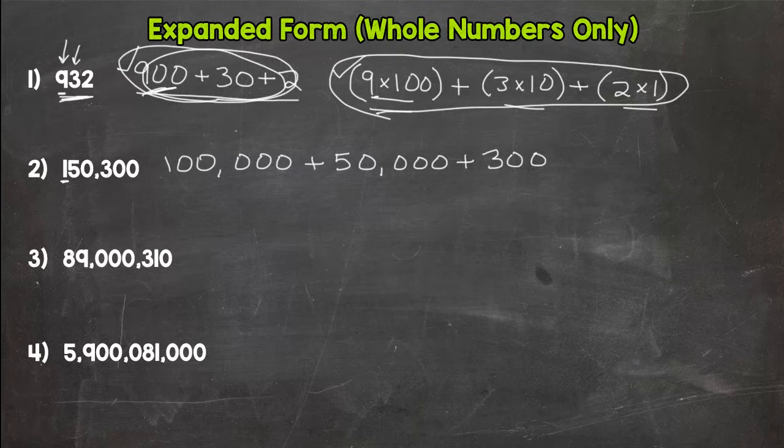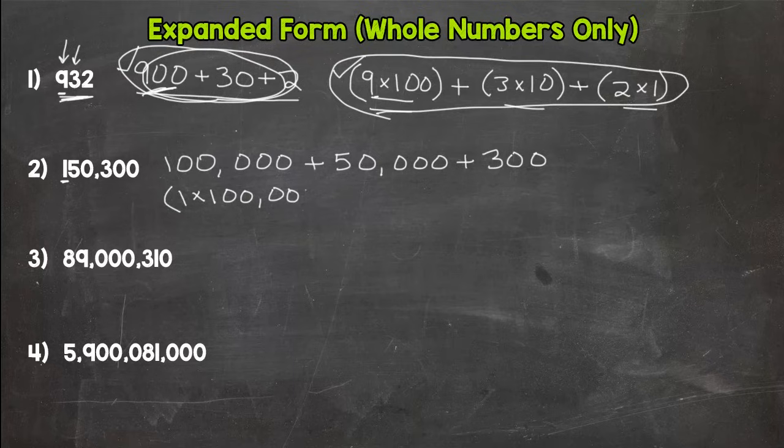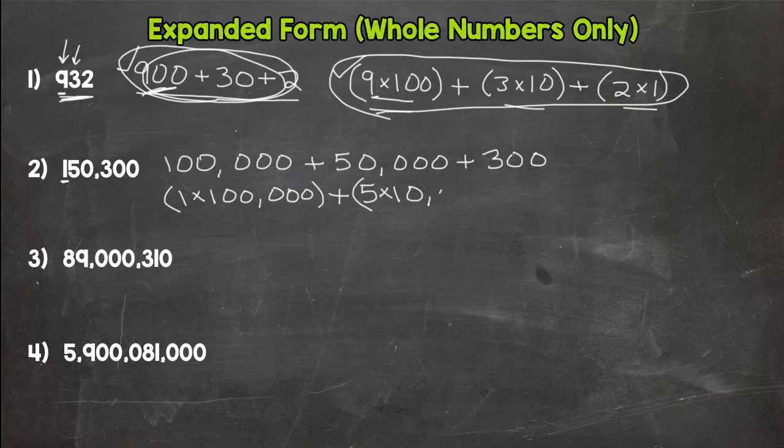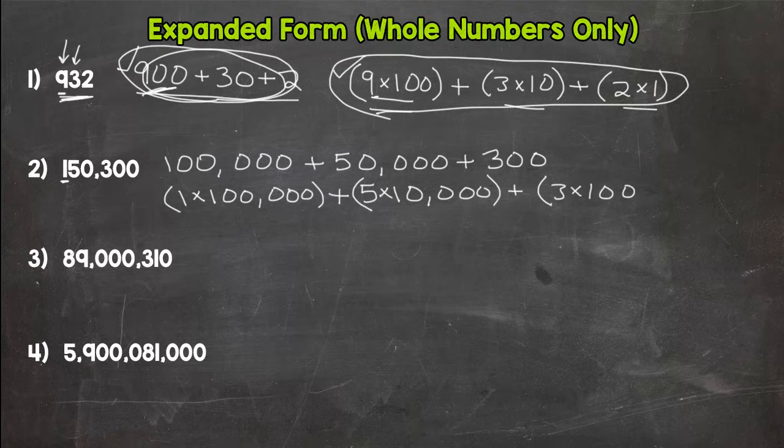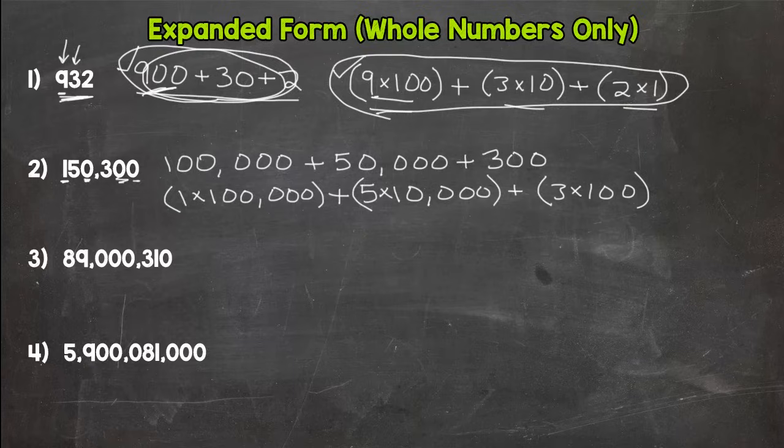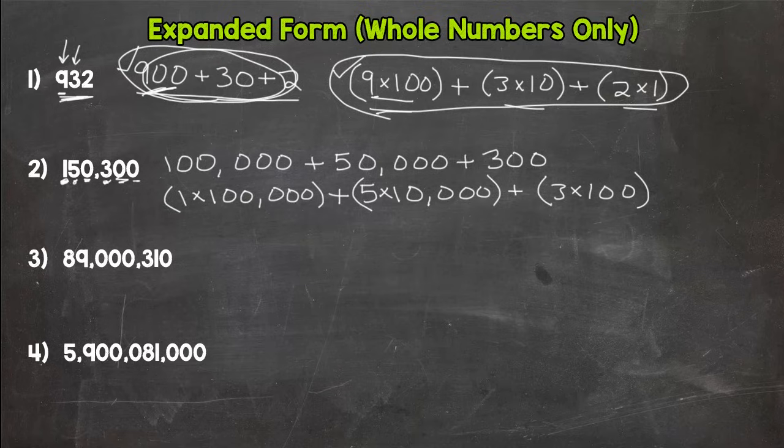Alright, let's do our parenthesis method. We have a 1 in the hundred thousands place, plus a 5—oops, forgot my parenthesis—5 in the ten thousands place, plus a 3 in the hundreds place. Now notice I skipped over the zeros. Those are just placeholder zeros and you do not need to show the value of them because they're just zeros. So I skipped over them. I had three digits in my number that I needed to show in my expanded form: the 1, the 5, and the 3. I skipped over the zeros.